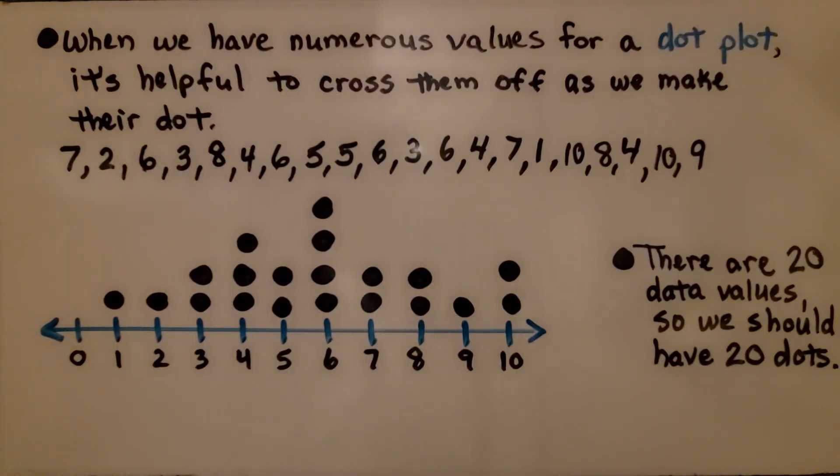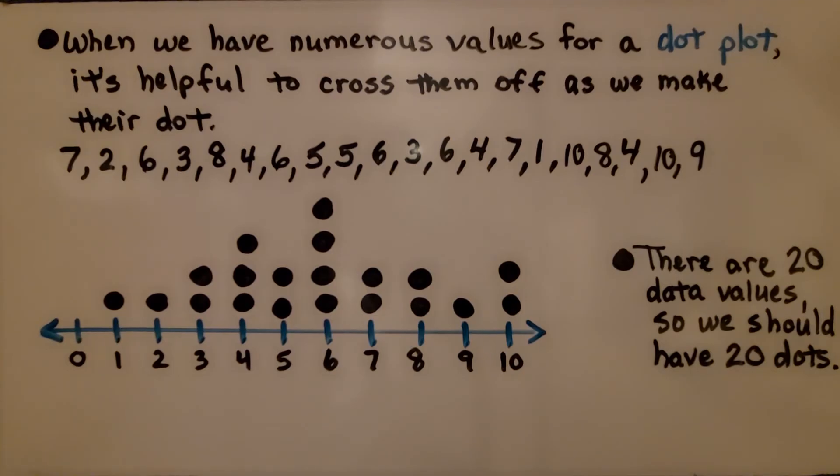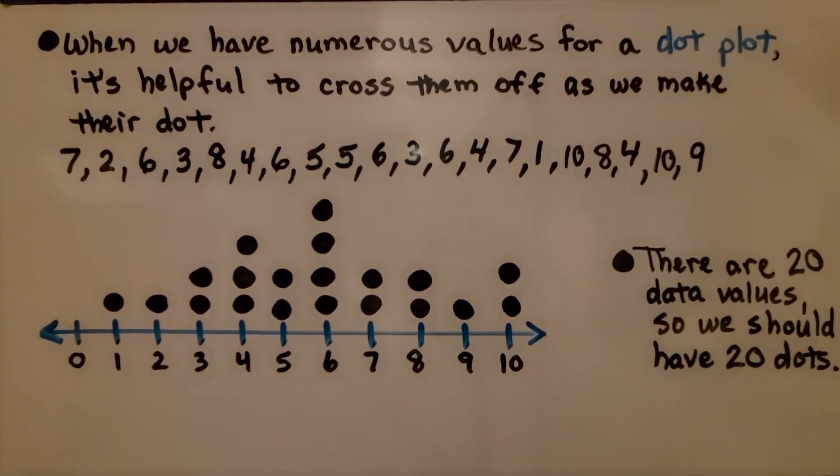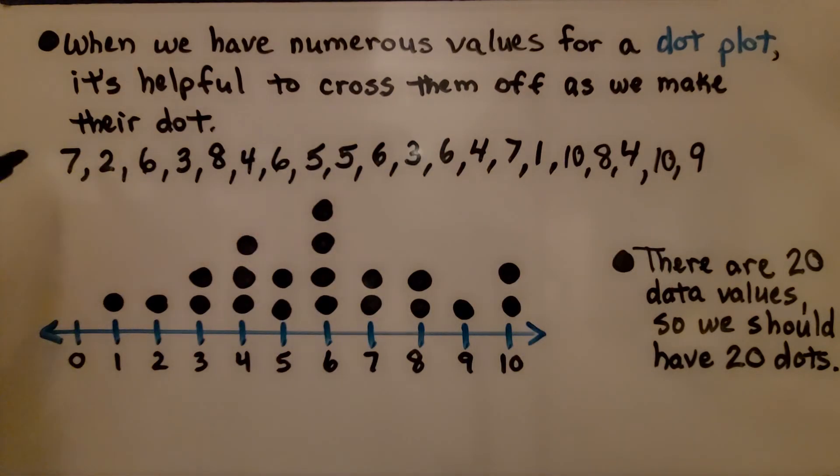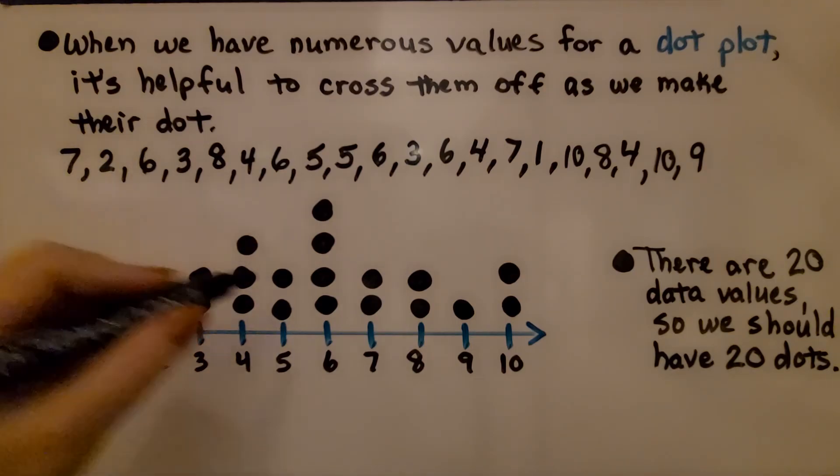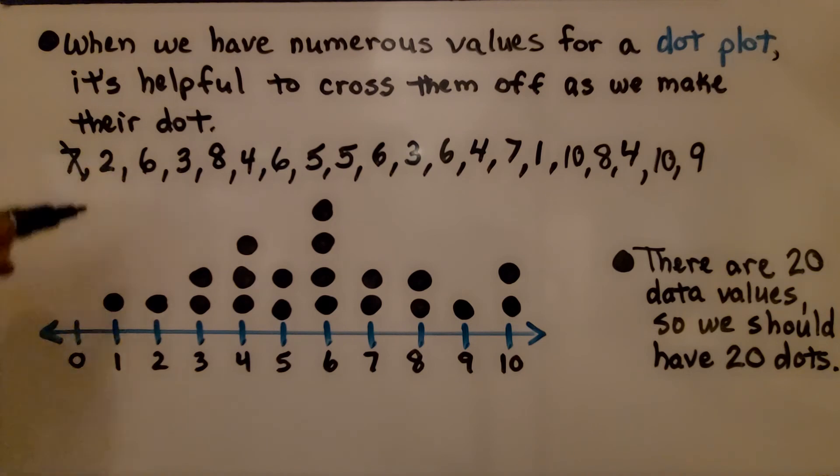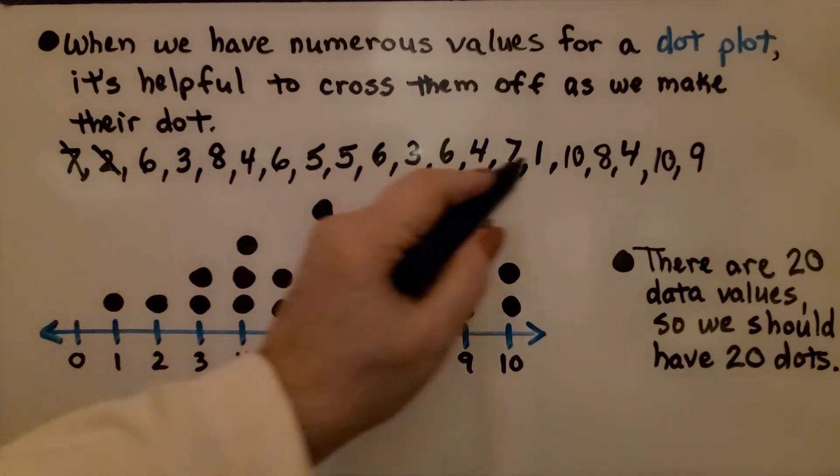Now we're only human. We do make mistakes. When we have numerous values for a dot plot, it's helpful to cross them off as we make their dot. Look at all of these data values. It's easier to just say 7, we put our dot and cross it off. 2, we make our dot and cross it off until we make all of them.